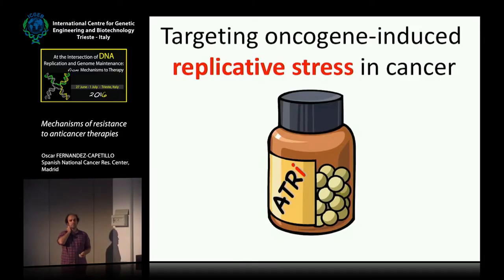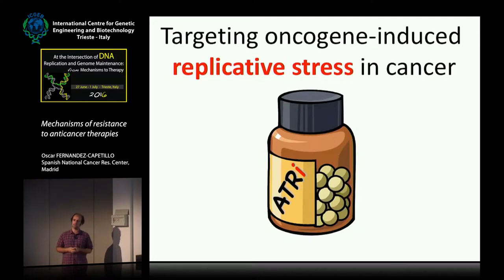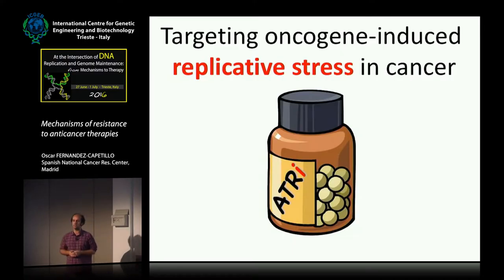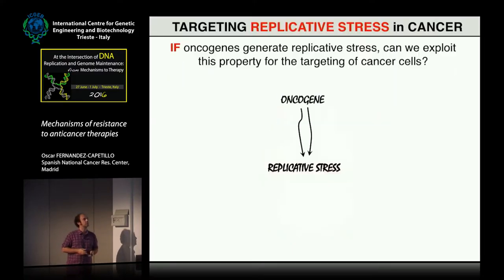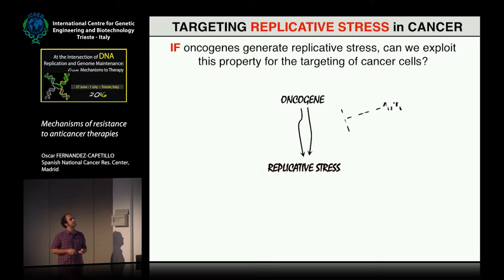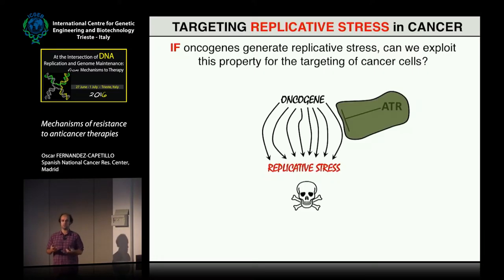One of them was already presented this morning by Eric — the idea of how you can exploit replication stress in cancer using different compounds like ATR inhibitors. The idea is simple: when you have cancer cells suffering from replication stress, if you inhibit ATR, this might exacerbate the amount of replication stress and kill the cancer cell.